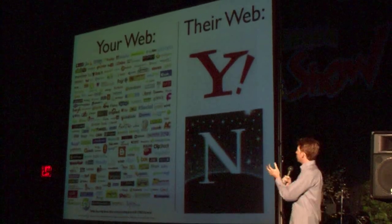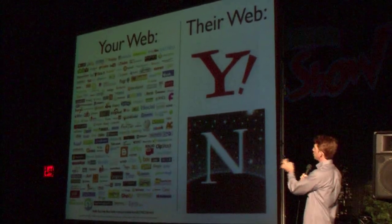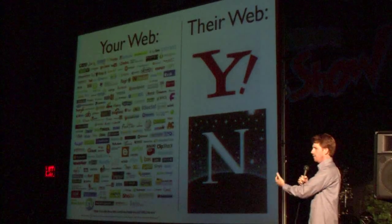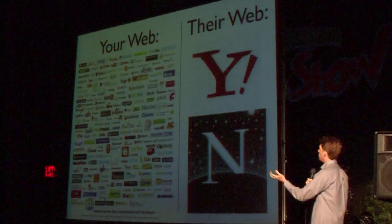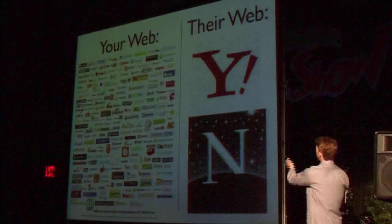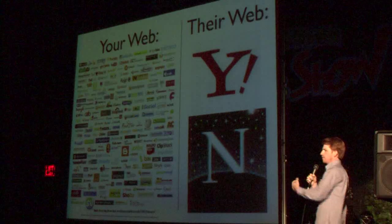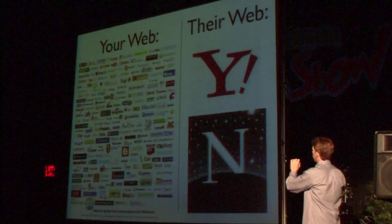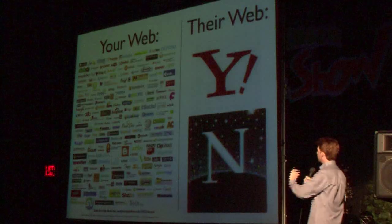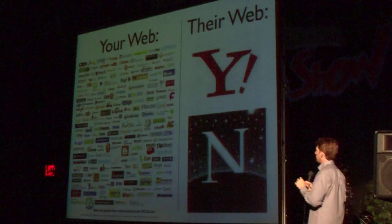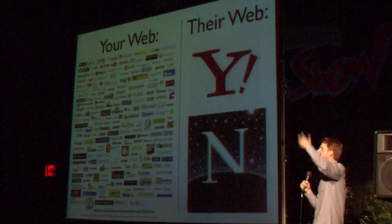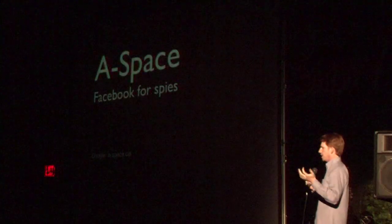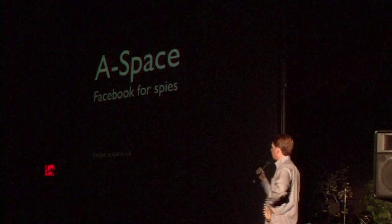We end up with these two mirror webs: the one we're used to where anyone who has an idea can develop it, put it out there, and let anyone who wants to use it decide if it's good — and then this shadow web that's sort of stuck in 1999. That's because whenever the IC wants an application, they need to say to someone, 'Can you build this for us?' instead of letting anyone who has an idea do it. They want to let anyone develop.